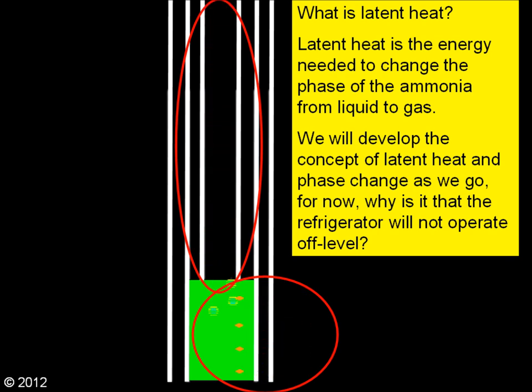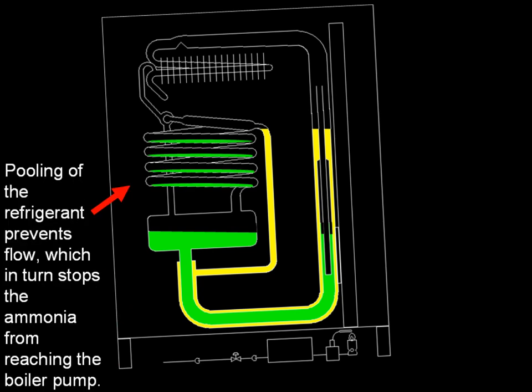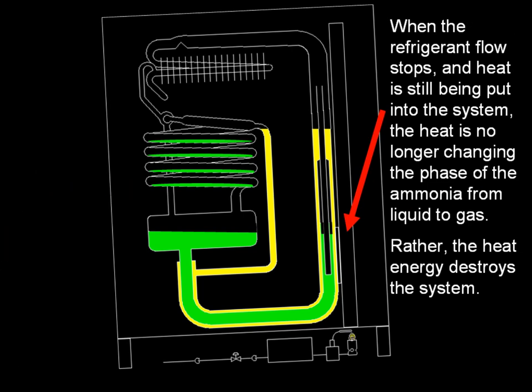Why is it that the refrigerator will not operate off-level? The refrigerator cannot be operated off-level because the refrigerant pools in the process tubing. Pooling of the refrigerant prevents flow, which in turn stops the ammonia from reaching the boiler pump. When the refrigerant flow stops and heat is still being put into the system, the heat is no longer changing the phase of the ammonia from liquid to gas — rather, the heat energy destroys the system.